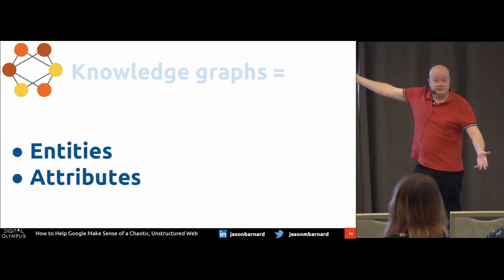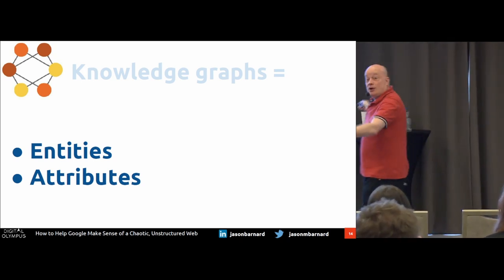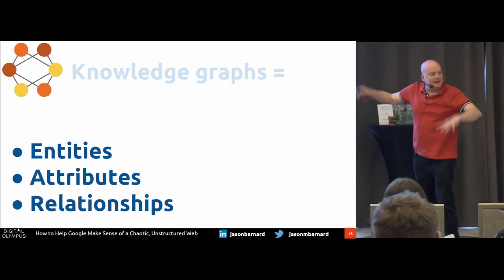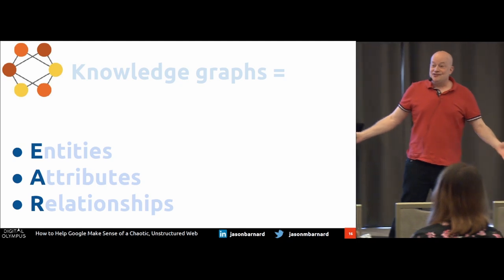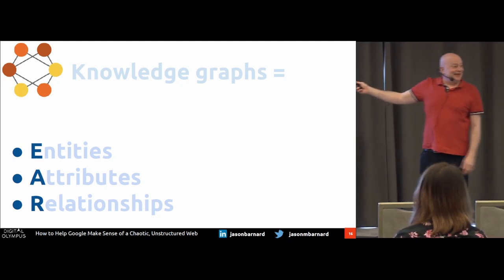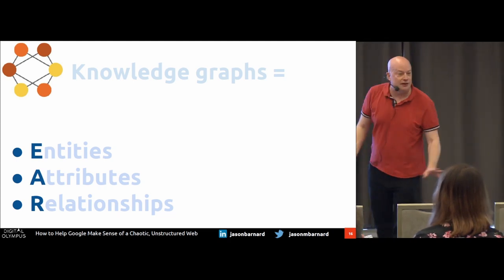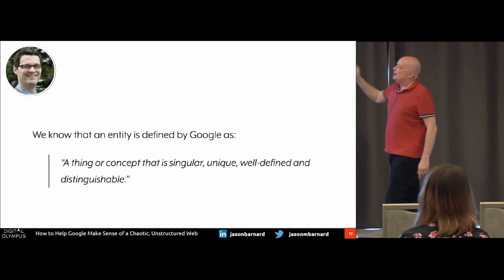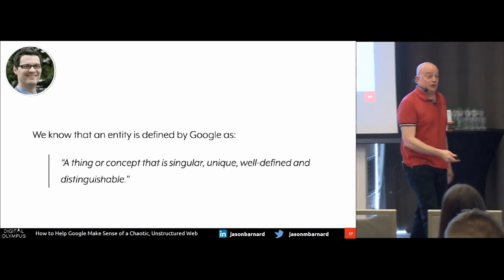Attributes, attributes, attributes — my age, my height, where I was born, whatever it might be, and the relationships between things. I thought of EAR — entities, attributes, relationships — this morning. It's completely rubbish, so you can forget EAR. But you do remember: entities, attributes, relationships. We know that an entity is defined by Google as a thing or concept that is singular, unique, well-defined, and distinguishable.